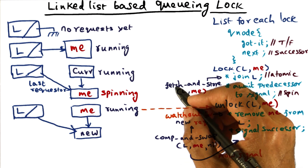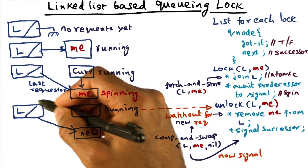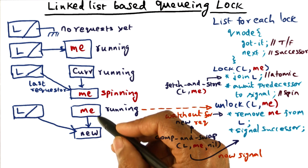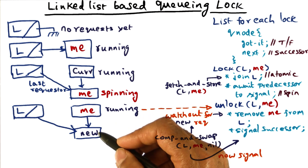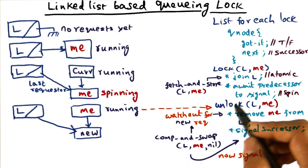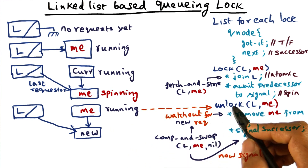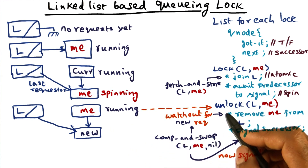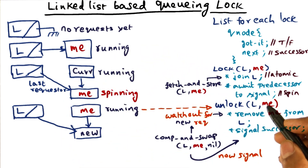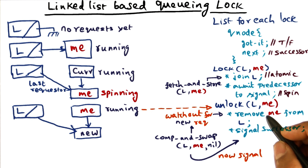Another advantage is that the space complexity of this data structure is proportional to the number of requesters to the lock at any point in time. So it is dynamic — it's not statically defined as in the array-based queuing lock — and that's one of the biggest virtues of this algorithm.